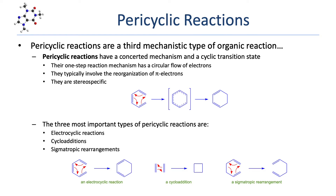Because all bond forming and cleaving occurs in a single step, pericyclic reactions are stereospecific. Any stereochemistry in the reactants will influence the stereochemistry of the products in a predictable way. The reaction shown here exemplifies a pericyclic reaction — it has a one-step mechanism and a cyclic flow of electrons. There are several types of pericyclic reactions, but the three most important are electrocyclic reactions, cycloadditions, and sigmatropic rearrangements.